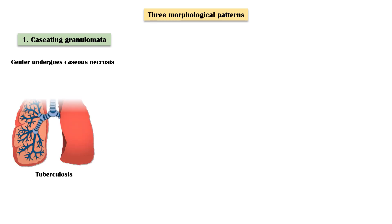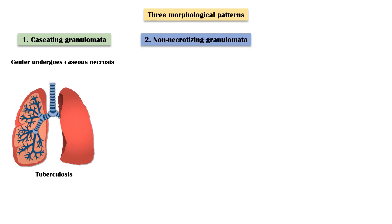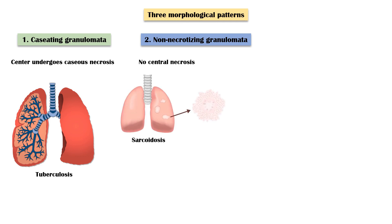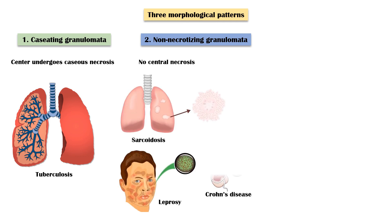There are three morphological patterns in granulomas. In caseating granulomata, the center of the granuloma undergoes caseous type of necrosis, and it is commonly seen in tuberculosis. In non-necrotizing granulomata, there is no central necrosis, and it is seen in sarcoidosis, leprosy, and Crohn's disease.